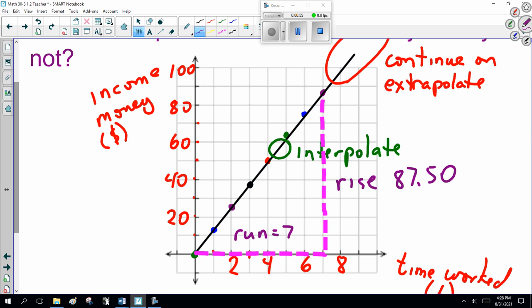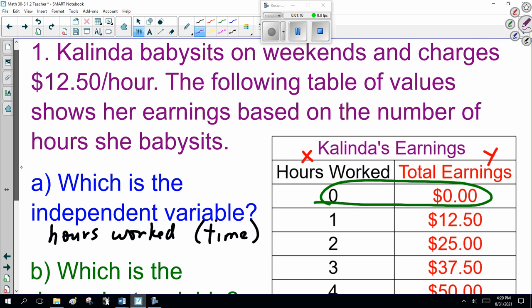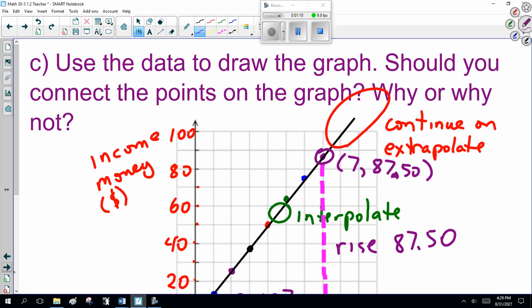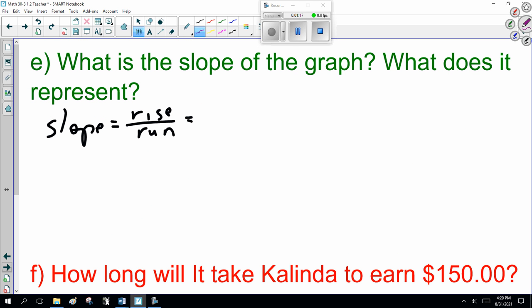And our rise which is 87.50. Now if you get that right, just look at the data points here. This is 7 and 87.50. It's right from my data table back here. So the rise is 87.50 divided by 7 which becomes 12.50.